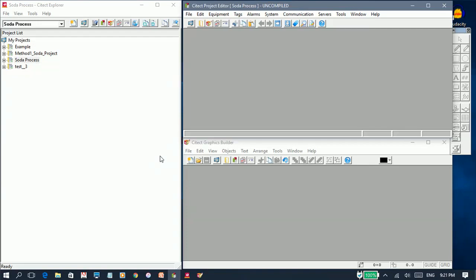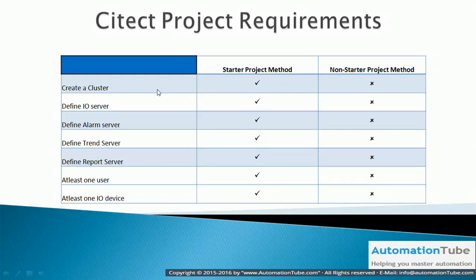Let's head back over to that list to recap. This is the list of the seven items that are required for any Cytic SCADA project: we need to create a cluster, define an I.O. server, alarm server, trend server, and report server, have at least one user, and have at least one I.O. device. I'm going to start creating or defining each of these in Visual Cytic.